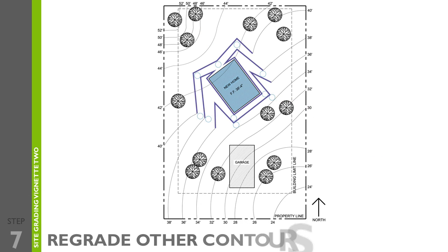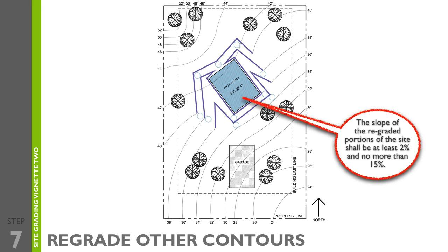Step seven is to regrade the other contour lines. Regrade the contour lines adjacent to your level area so that the minimum and maximum slope requirements for spacing between the lines is met. This may require a trial and error process in order to make sure you've chosen the best location for the level area. For this vignette, the slope of the regraded portions of the site shall be at least 2% and no more than 15%. To calculate these numbers, use the formula from the study guide: width equals interval divided by slope.